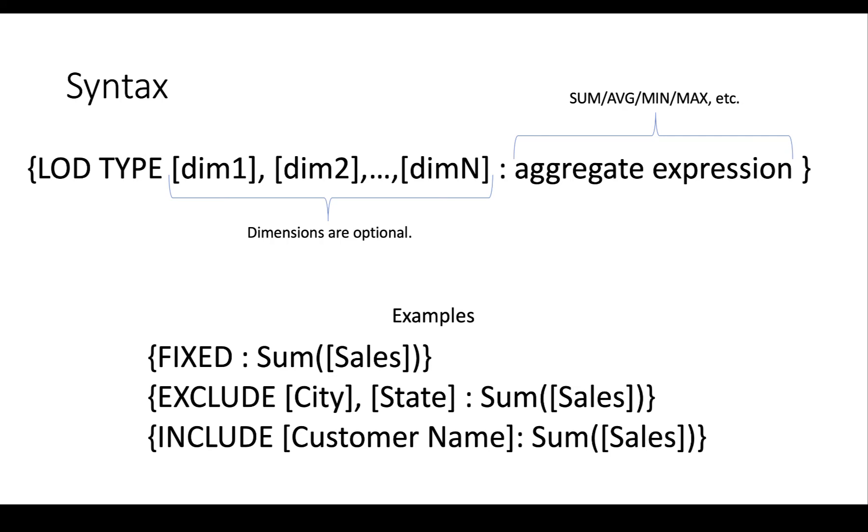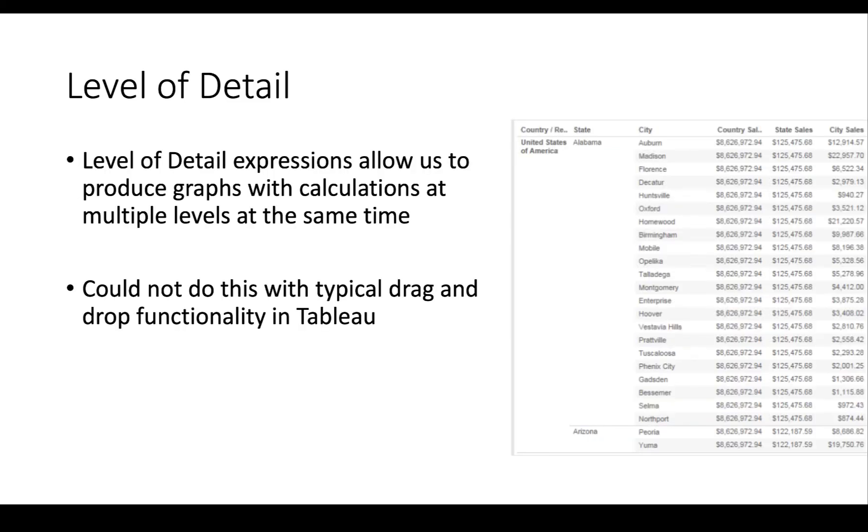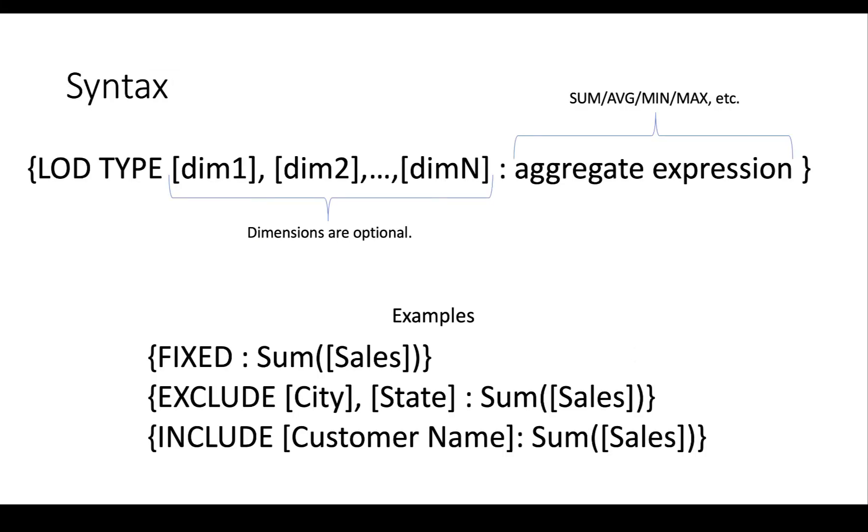And what fixed, and so here we have fixed colon sum of sales, which basically says for this row in the database, what is the sum of sales that's fixed? And we'll talk about what that means. And in this one, exclude, do the sum of sales for everything that's in this graph, but take away city and state and then calculate sum of sales. So it's kind of the same thing as take away city and state in this graph, which will give us the country sales. And then there's include, which is take everything that's in the graph and then add customer name and then calculate sum of sales.